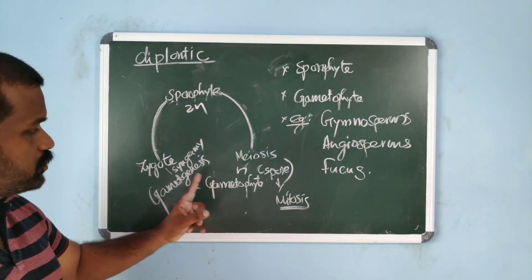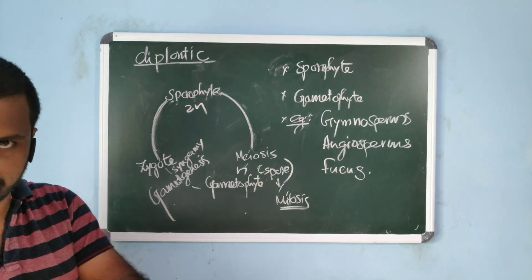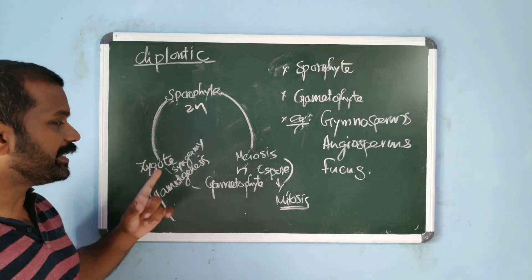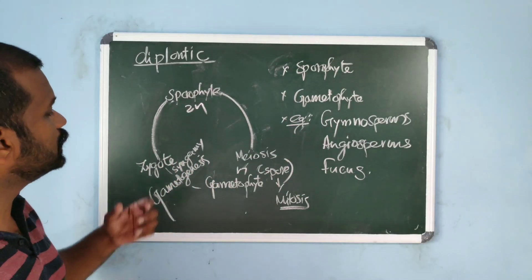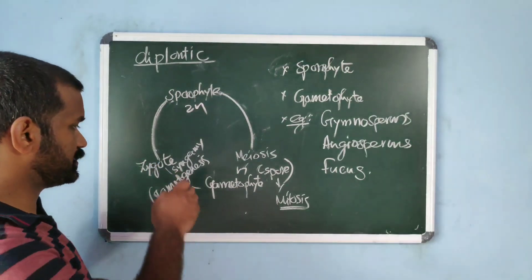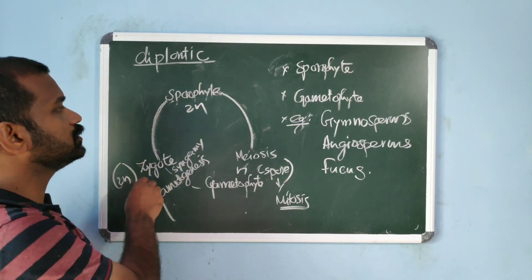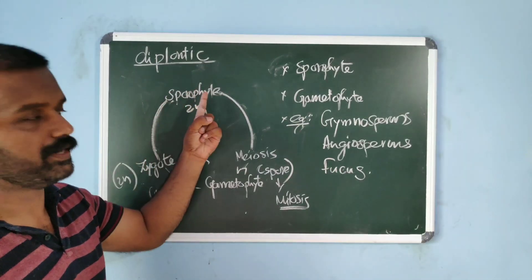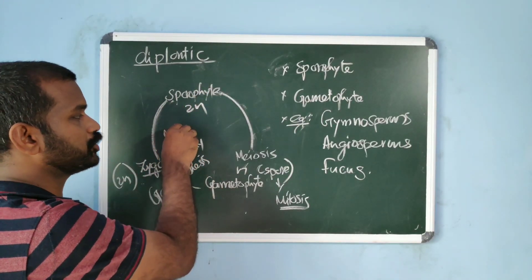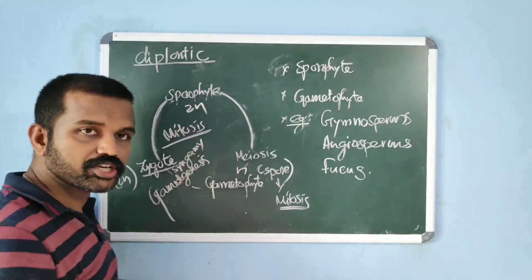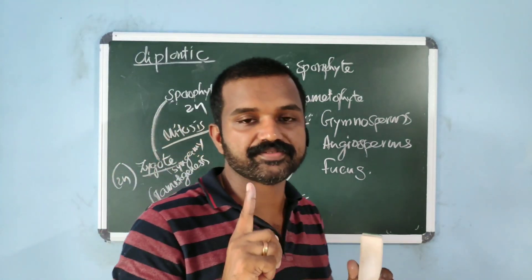Gametophyte produces gametes, and gametes undergo fertilization. The resultant product is a diploid zygote, which will develop to form a diploid sporophyte. Here again, zygote undergoes mitosis. This is diplontic life cycle.